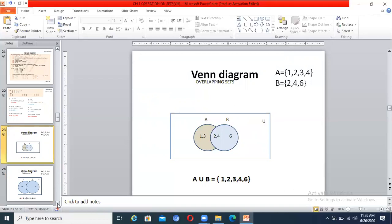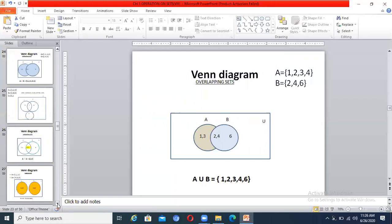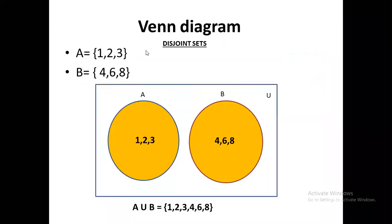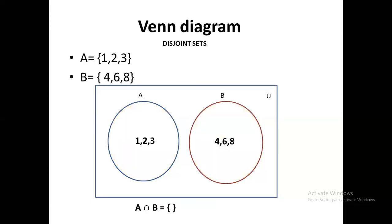Right now we discussed only the simple Venn diagrams. If you want to ask anything, you can ask me through chat. For disjoint sets — set A = {1, 2, 3} and set B = {4, 6, 8} — set A and set B are drawn separately because there is no common element between them. They are disjoint sets. A union B = {1, 2, 3, 4, 6, 8}, and we shade both circles. For A intersection B of disjoint sets, there is nothing to shade in the middle.